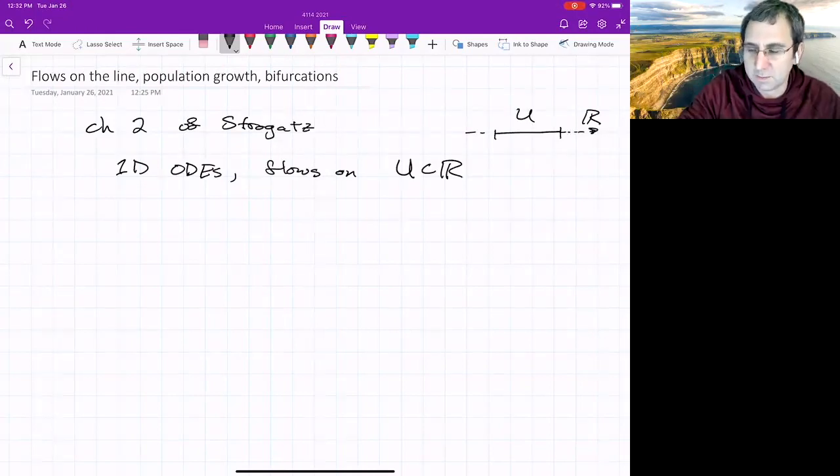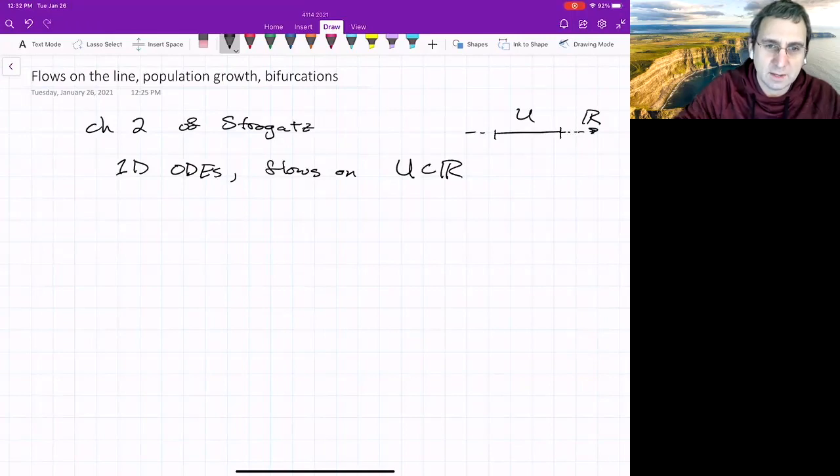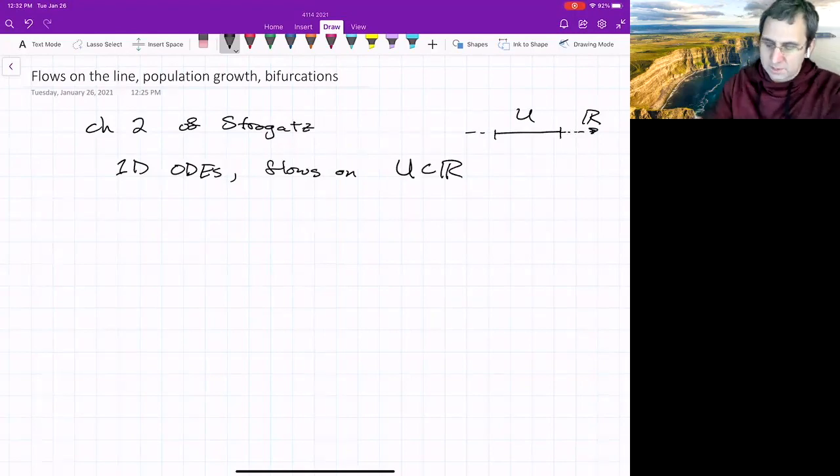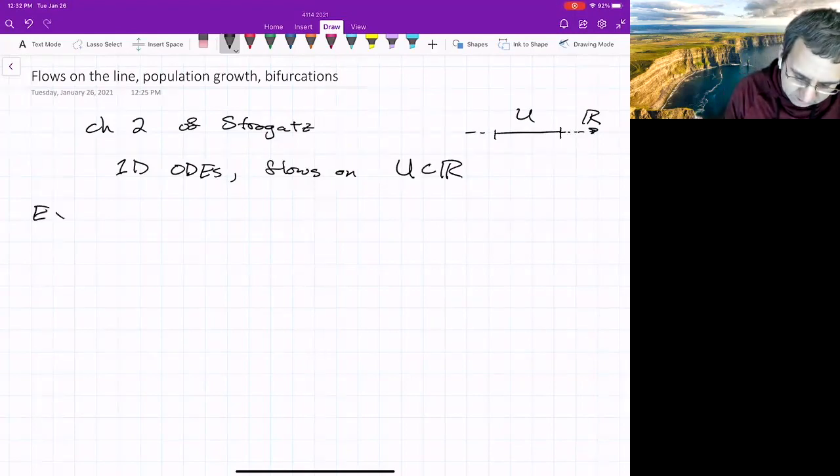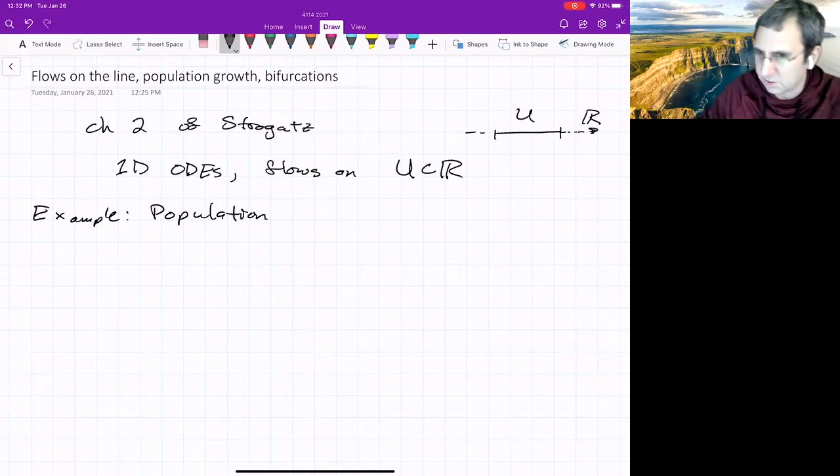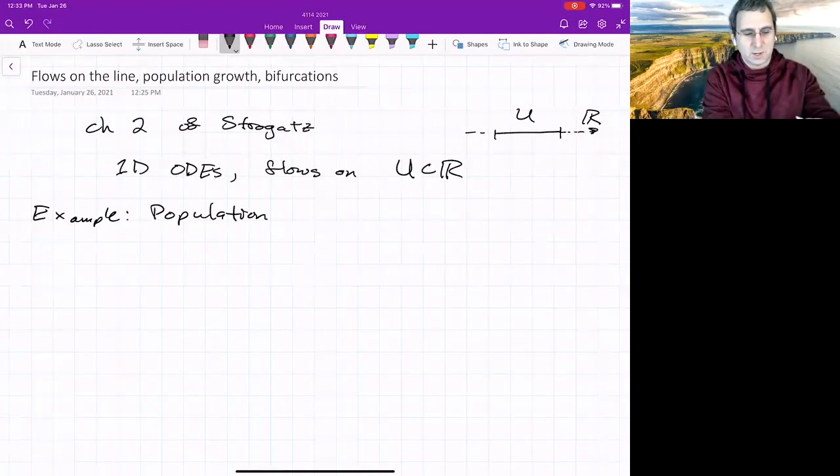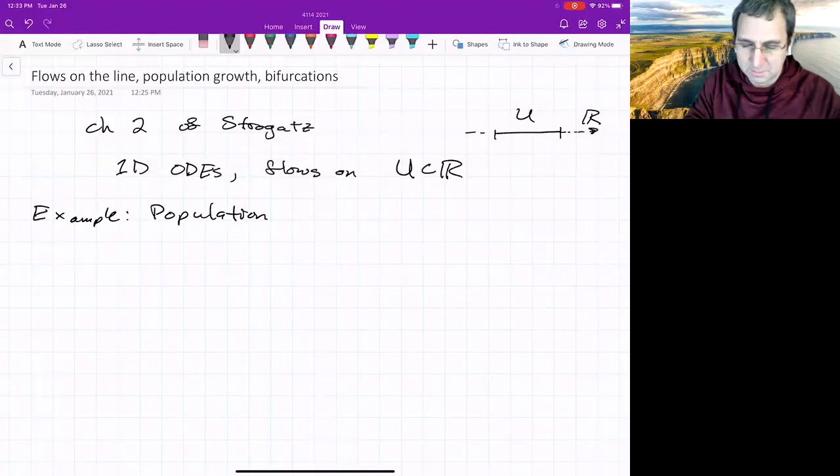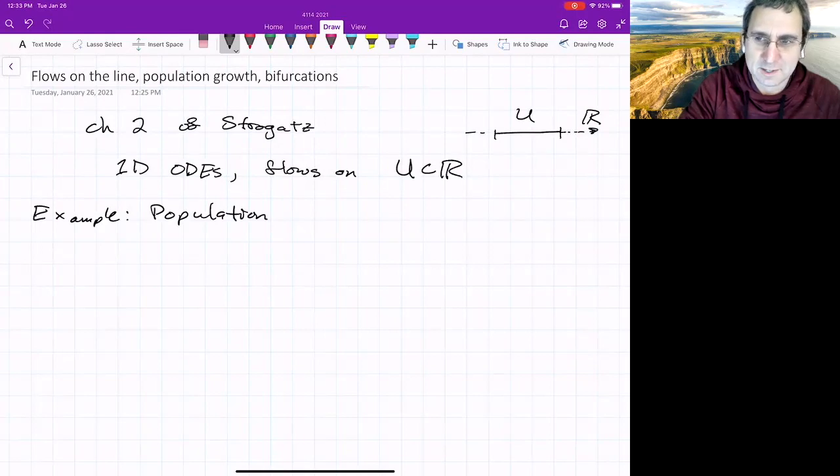The first thing, we'll look at population growth. A model of population growth, a very simple model, is this one we'll discuss. In fact, this was proposed as a model for growth of the human population, but I'd rather think of bacteria or insects or something, because I think human population growth is probably more complicated.